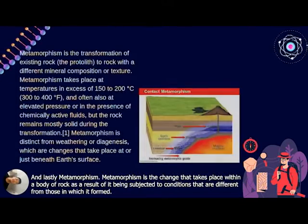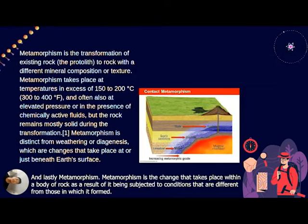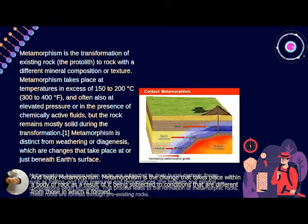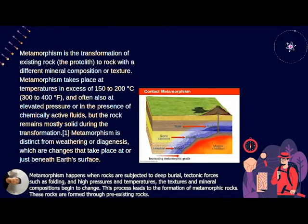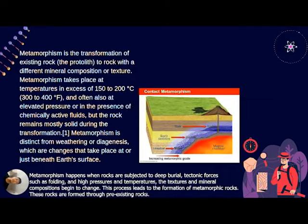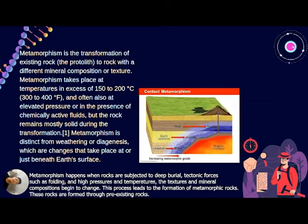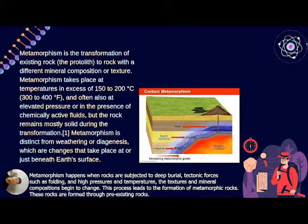Lastly, metamorphism is a change that takes place within a body of rock as a result of being subjected to conditions different from those in which it originally formed. Metamorphism happens when rocks are subjected to deep geological processes such as folding, where high pressures and temperatures cause the textures and mineral compositions to begin to change. This process leads to the formation of metamorphic rocks from pre-existing rocks.